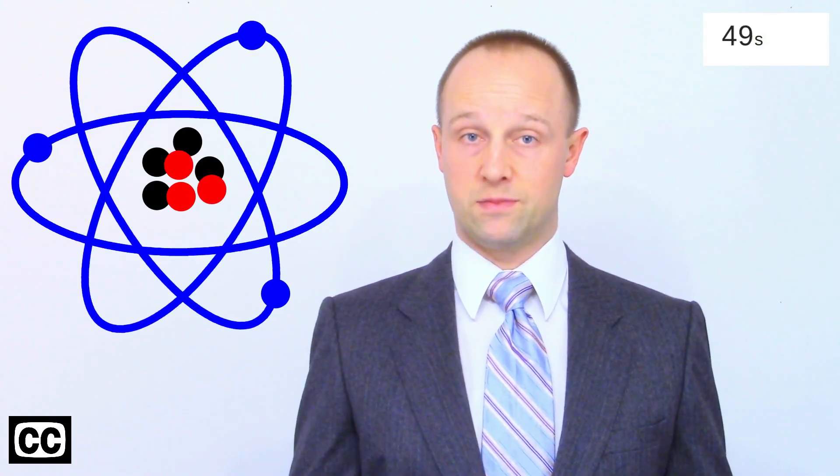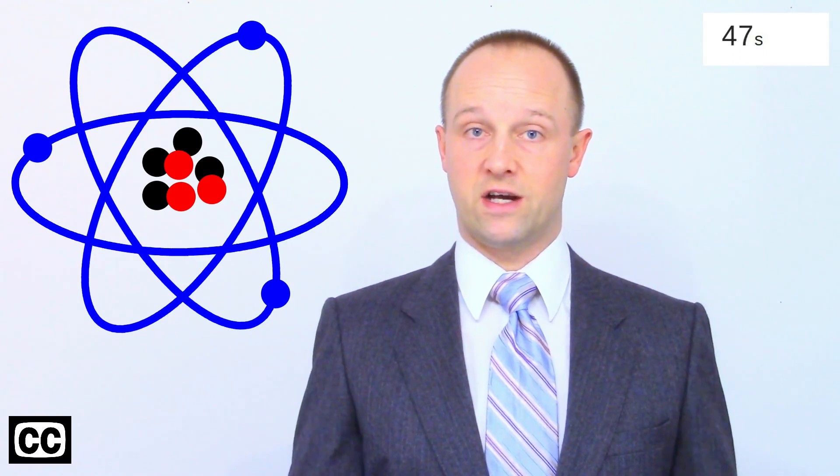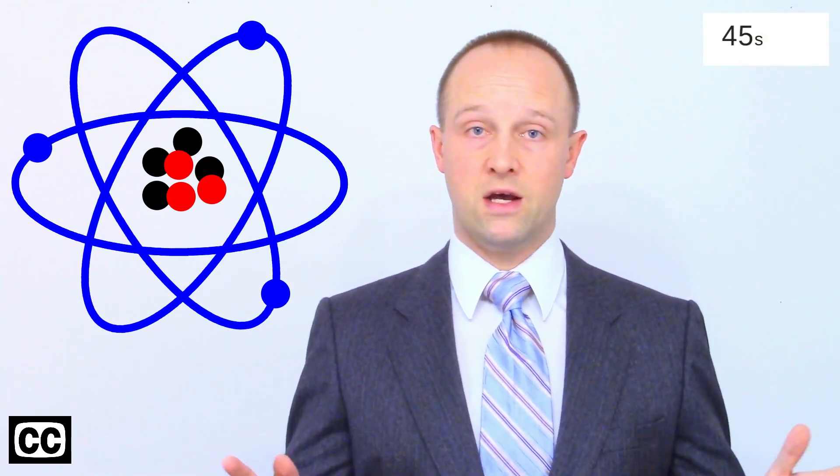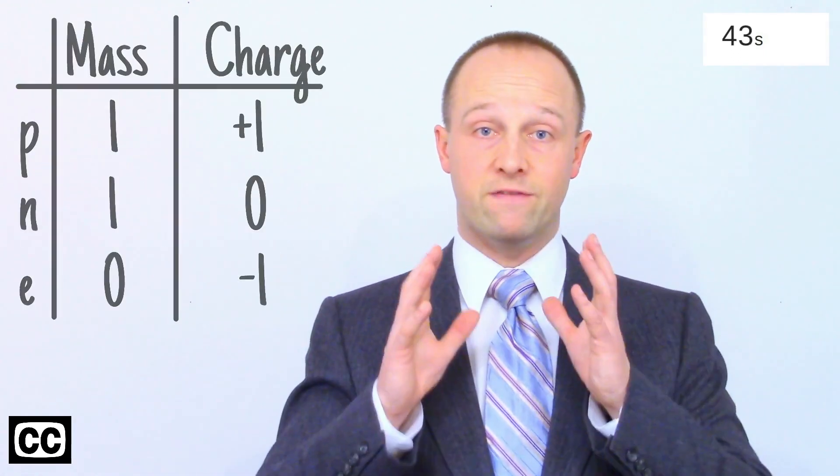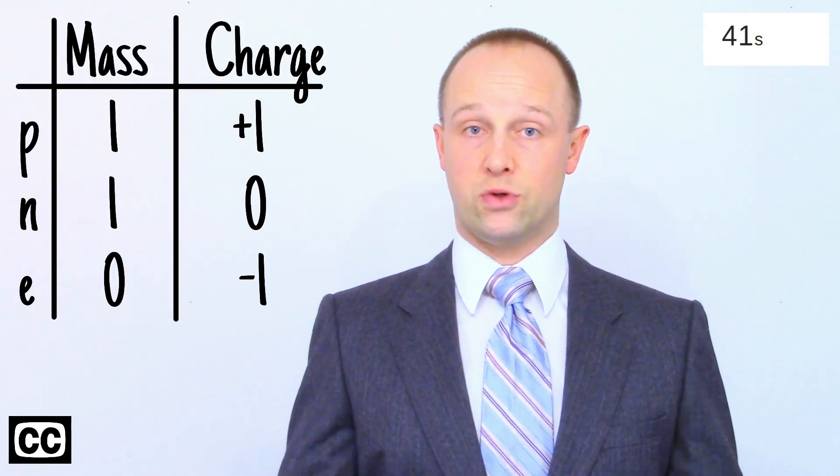Atoms are not really the tiny spheres we sometimes represent them as, but are actually made of smaller particles. They have negatively charged electrons, which have almost zero mass, orbiting a central nucleus made of positively charged protons and neutral neutrons.